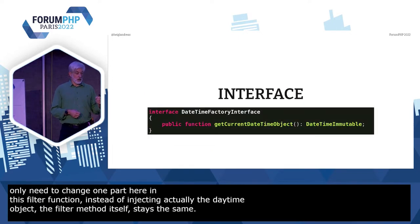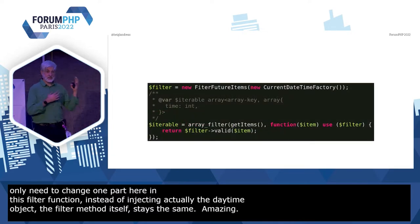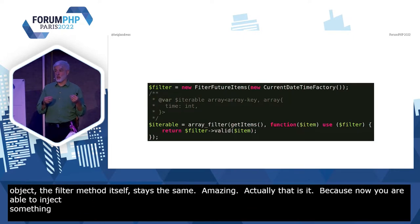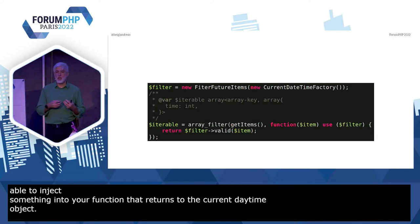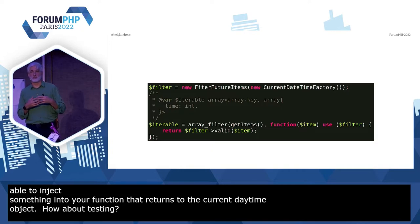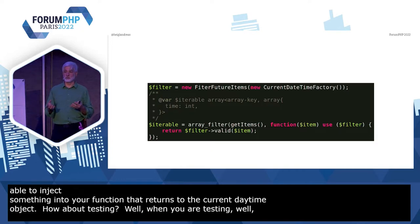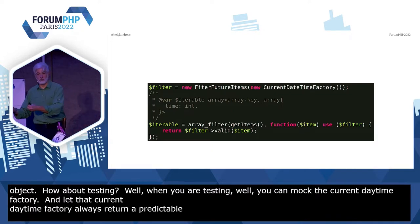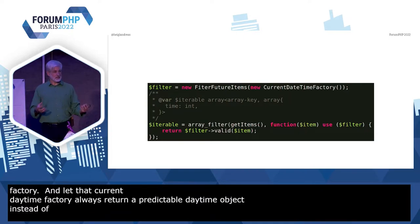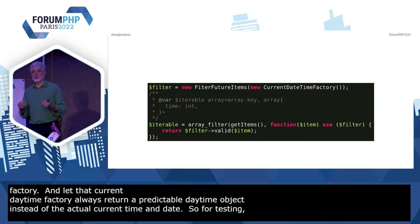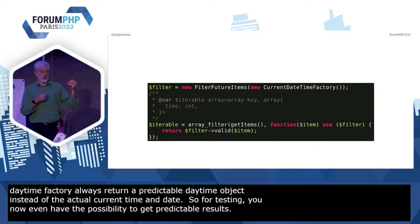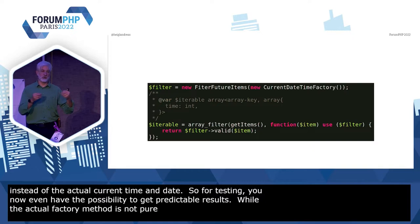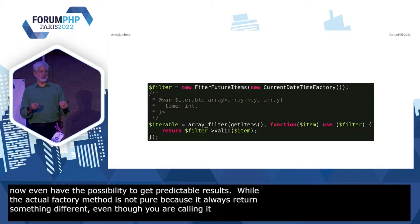Amazing. Now you are able to inject something into your function that returns you the current DateTimeObject. When you are testing, you can mock the `CurrentDateTimeFactory` and let that factory always return a predictable DateTimeObject instead of the actual current time and date. So for testing, you now have the possibility to get predictable results. While the actual factory method is not pure, you can make that predictable — you can make that a pure function.